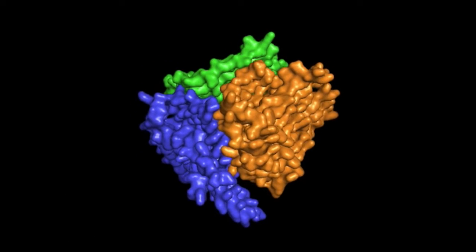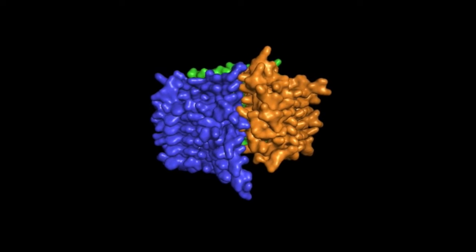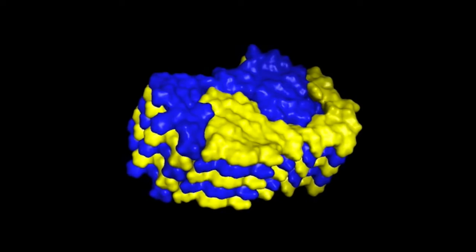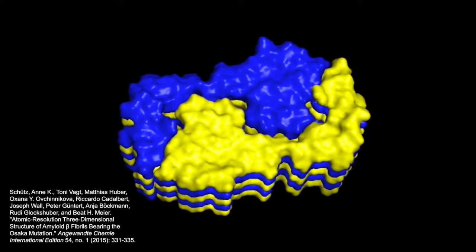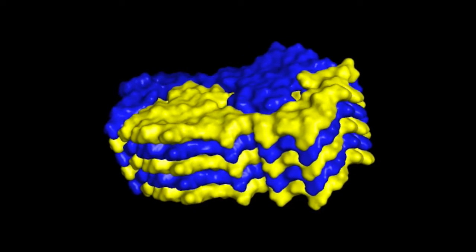Amyloid fibril formation is key to the etiology of many well-known diseases, from Alzheimer's disease and dementia with Lewy bodies to prion disease and type 2 diabetes. On the other hand, some amyloids have important functional roles, like the curly fibrils in bacterial biofilms and the components of some types of spider silk.